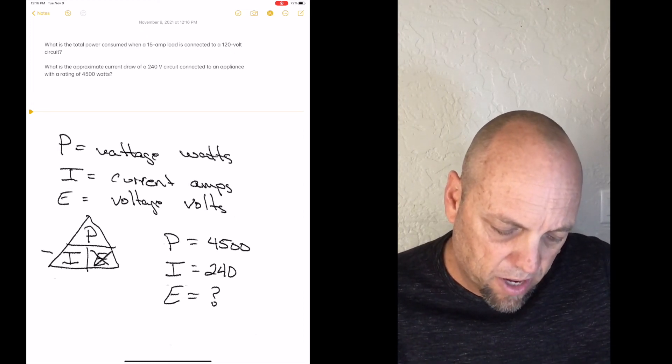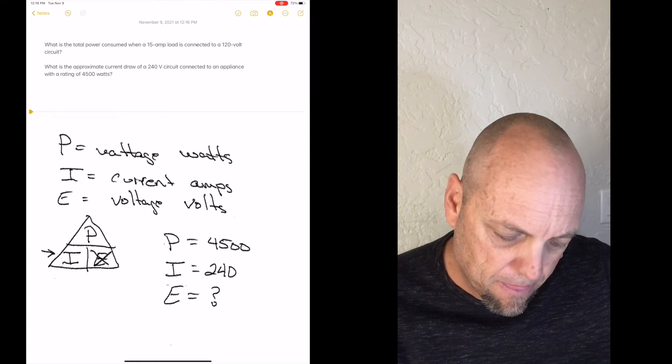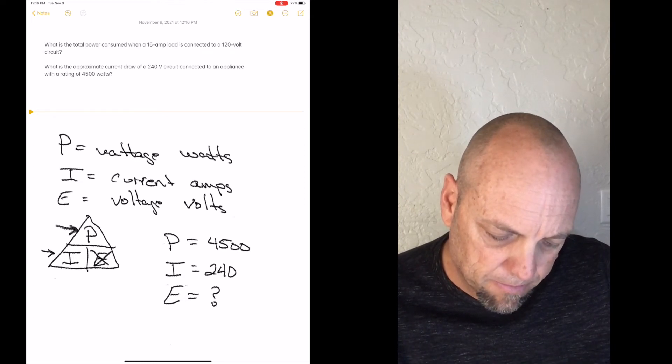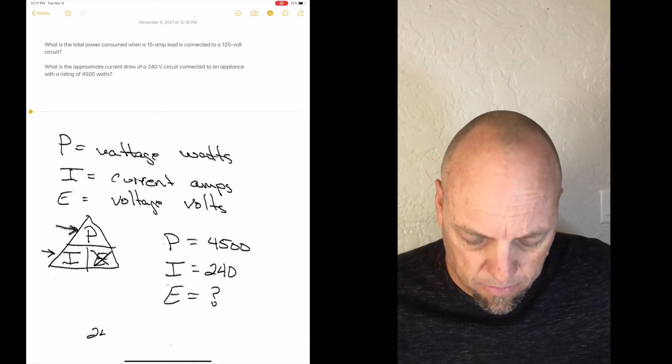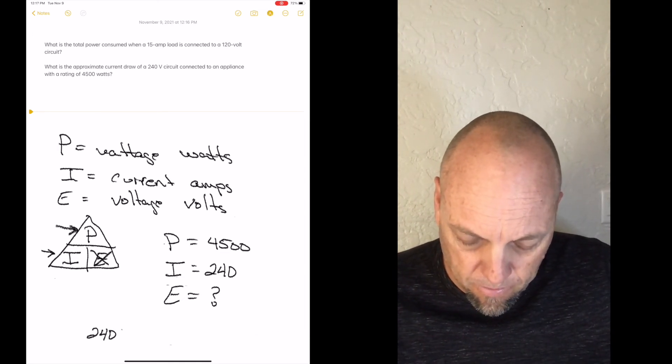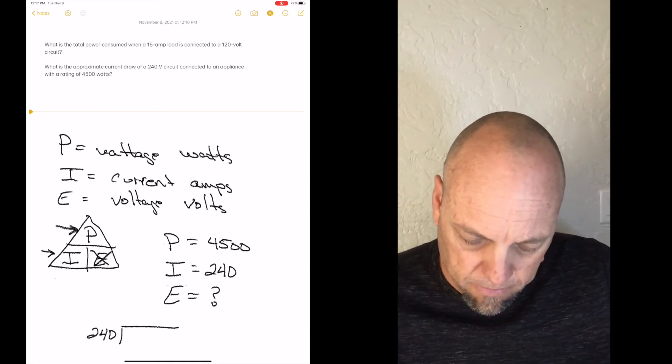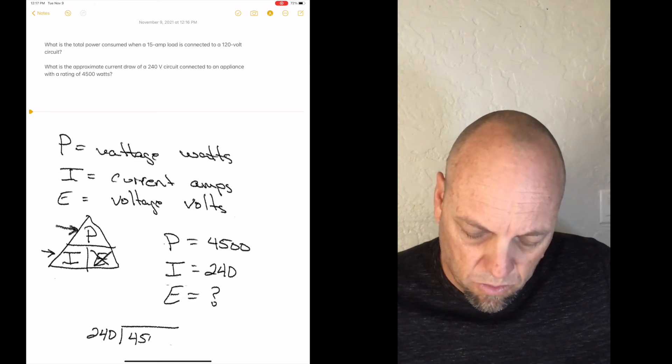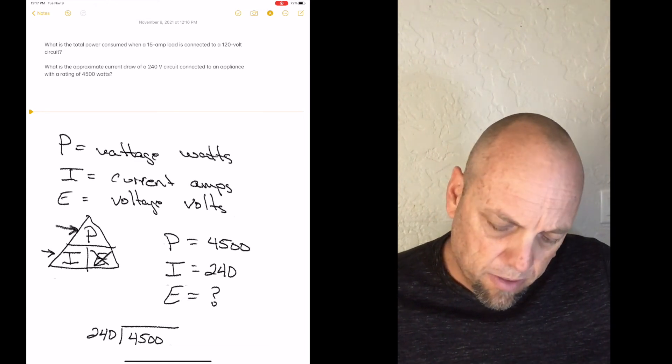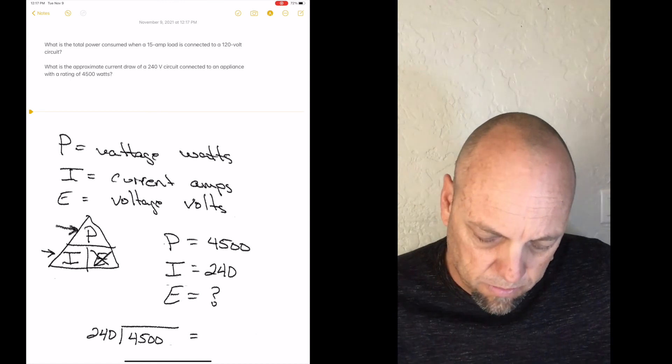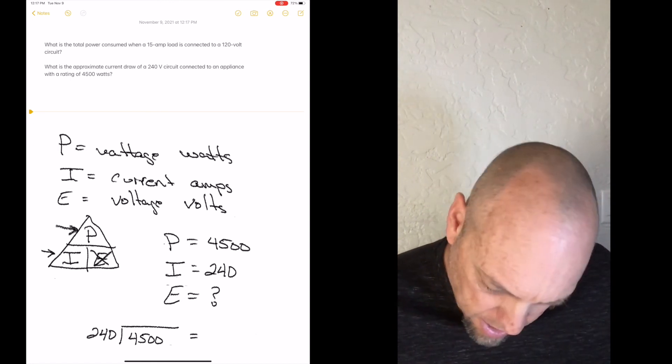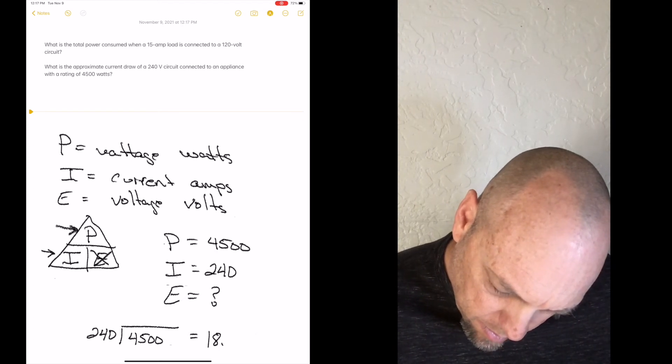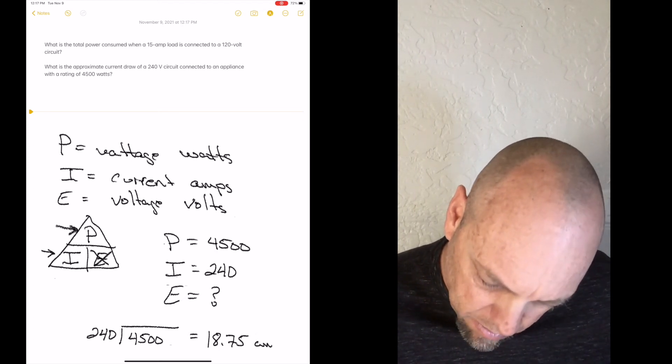So we're going to have to divide I into P. So, excuse my old school math. 240 divided into 4500, which equals 18.75 amps.